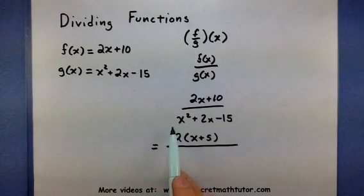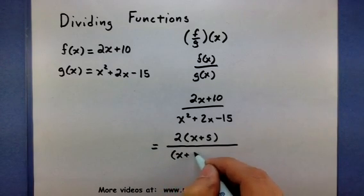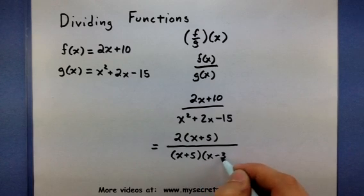Alright, and in the bottom, if we factor that polynomial, looks like we'll get an x plus 5 and x minus 3.